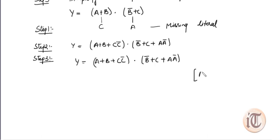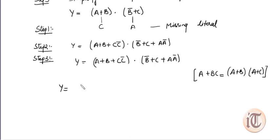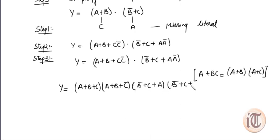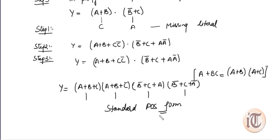There is a property which says: if we have A + (B · C), we take it as (A + B) · (A + C). Applying this distributive law to each term: the first term (A + B + C · C̄) becomes (A + B + C) · (A + B + C̄). The second term (B̄ + C + A · Ā) becomes (B̄ + C + A) · (B̄ + C + Ā). Now all three input variables appear in each sum term, so this is a standard POS form.